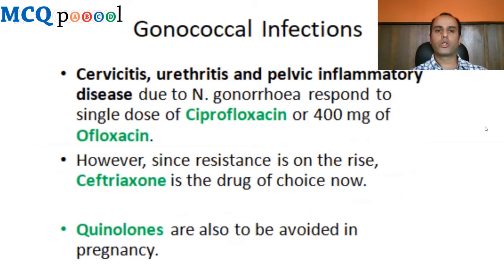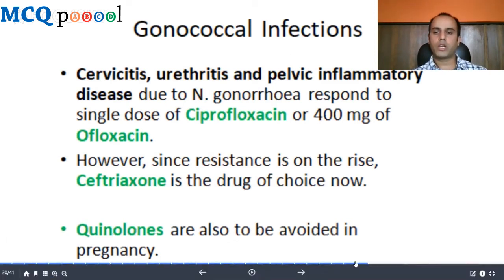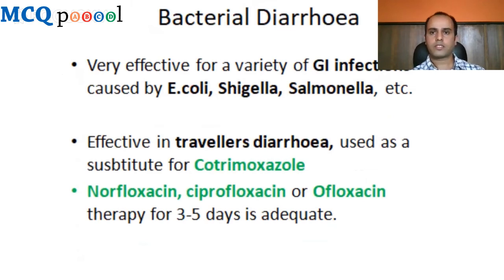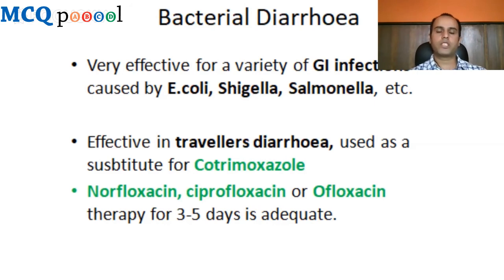For gonococcal infections — cervicitis, urethritis, pelvic inflammatory disease due to Neisseria gonorrhoeae — a single dose of ciprofloxacin or 400 mg of ofloxacin is effective. However, since resistance is rising, ceftriaxone (third-generation cephalosporin) is now the drug of choice. Quinolones and fluoroquinolones should not be used in pregnancy for gonococcal infections. For bacterial diarrhea due to E. coli, Shigella, Salmonella, and travelers' diarrhea, norfloxacin, ciprofloxacin, or ofloxacin for three to five days is adequate.